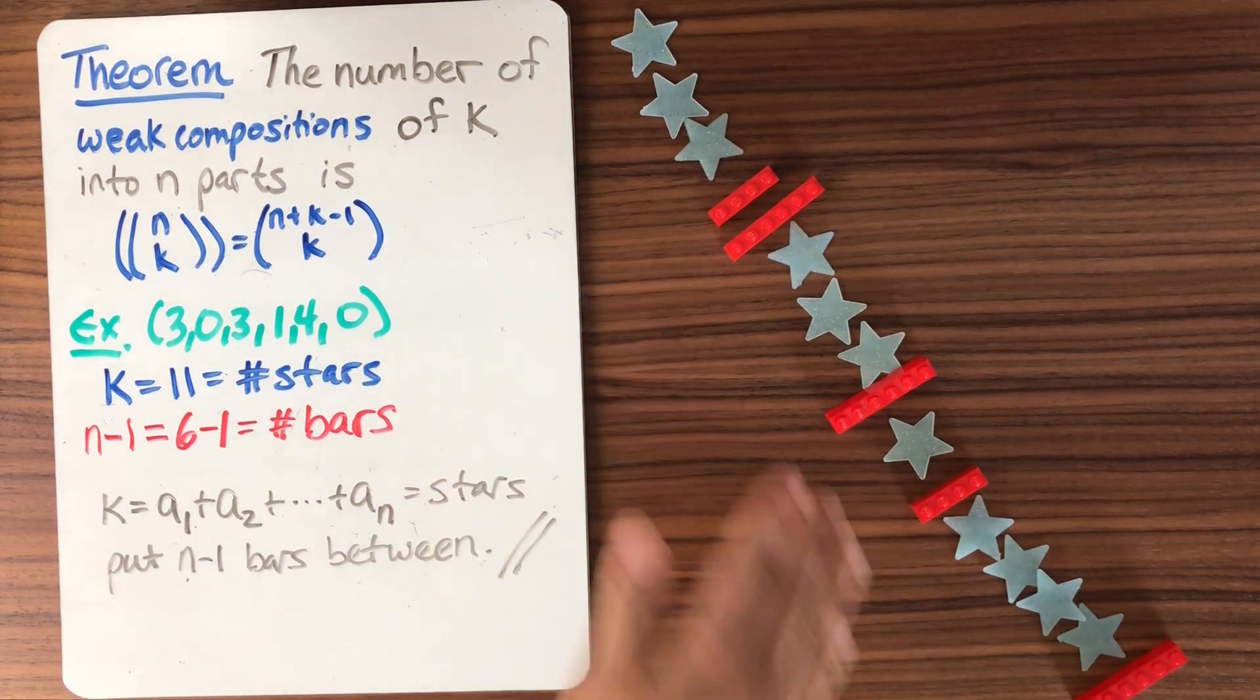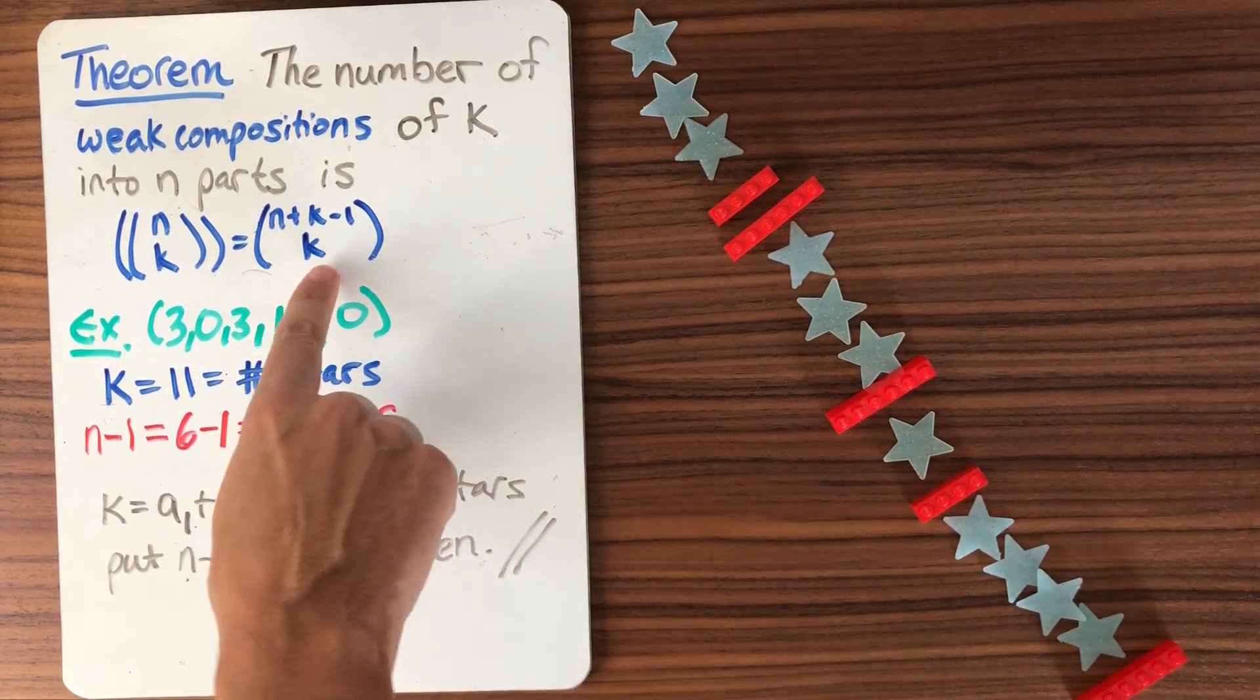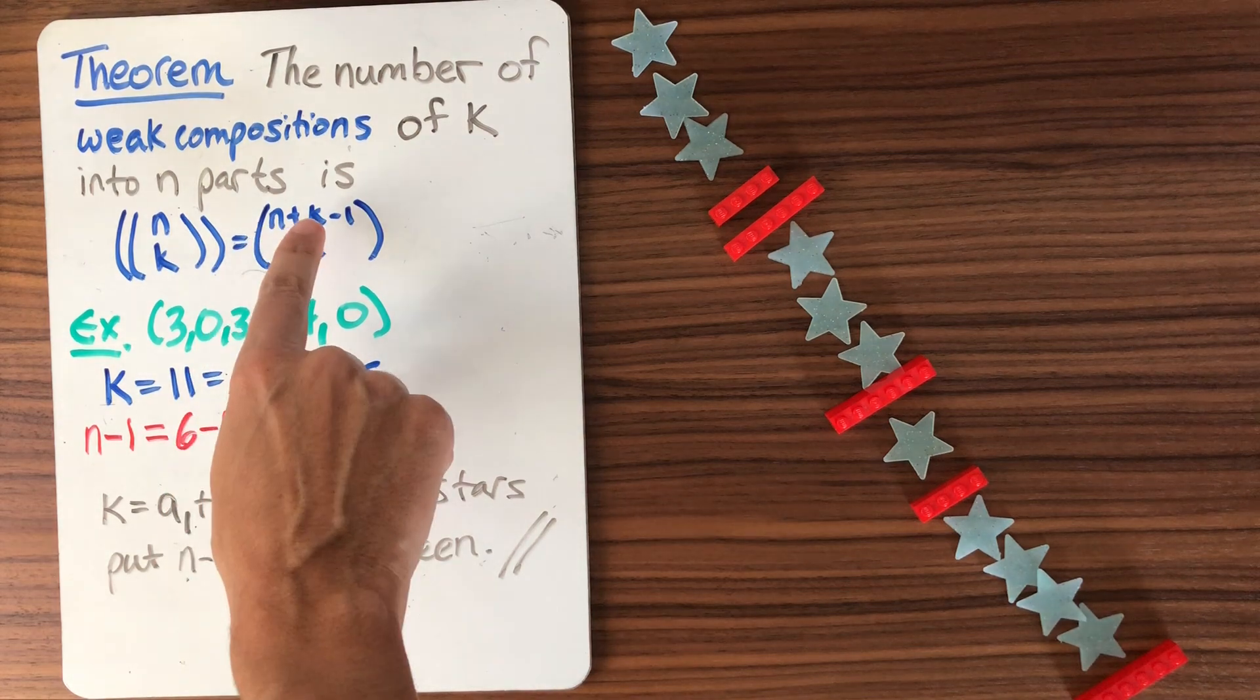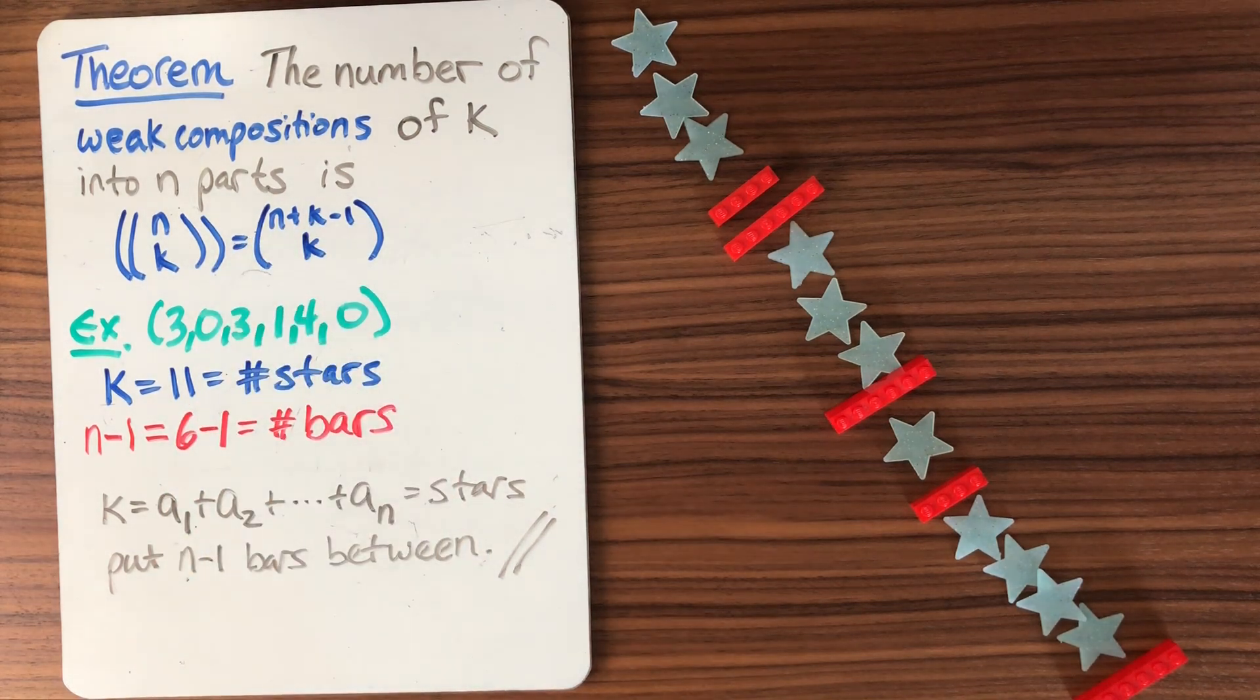How do we count it? Well, we can choose the positions of the stars or the positions of the bars. This is choosing that. It's also n plus k minus one, choose n minus one, which is another familiar way to write it.